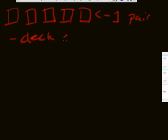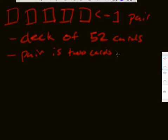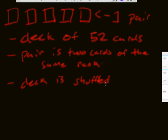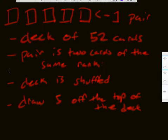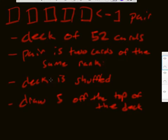Let's quickly talk about what these five cards are being dealt from. They're going to be dealt from a deck of 52 cards. What is a pair? A pair is two cards of the same rank, so that would be like six of clubs and the six of spades. We need to make the assumption that the deck is shuffled, and we're just going to draw five off the top of the deck. Let's go ahead and think about how we can calculate this.